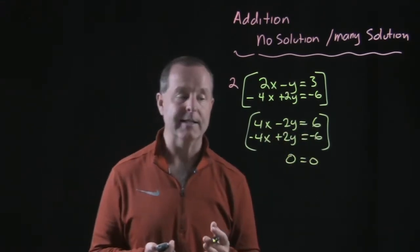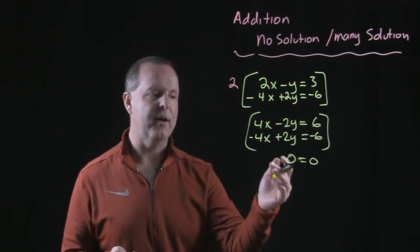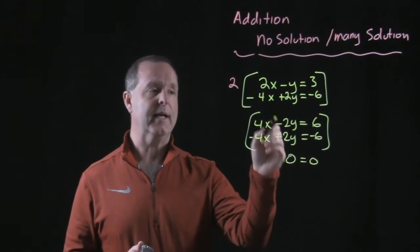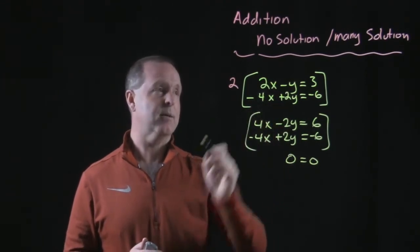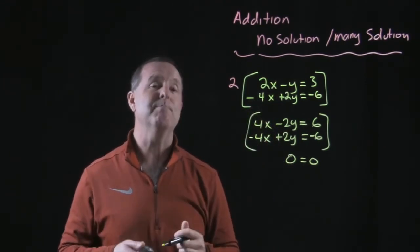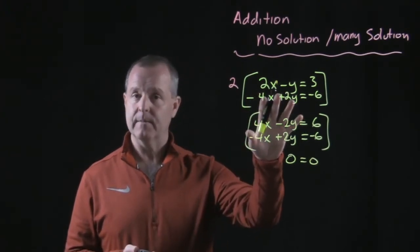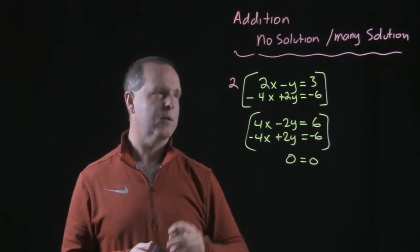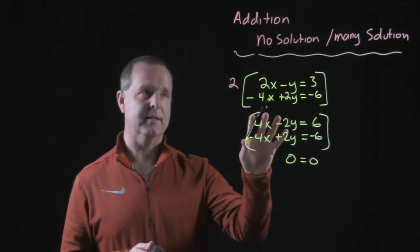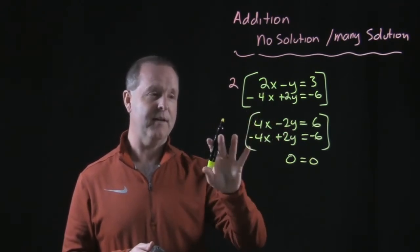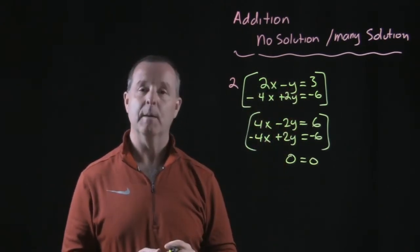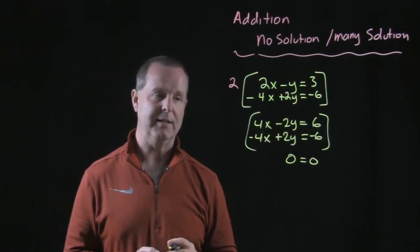Or what I get is a true statement. It doesn't matter that it was zero that equals zero. Any true statement would have demonstrated that this system has multiple solutions or infinitely many solutions, which means if I were to graph them, they land on top of each other. So we can also solve a system by the addition method through eliminating a variable that also produces many solutions or infinitely many solutions.